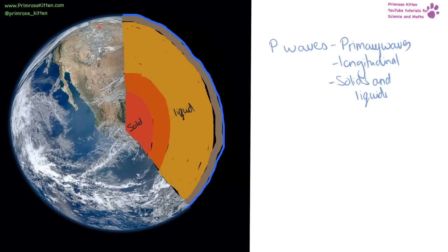So if an earthquake happens over here, the P waves are going to go all the way through, including through the solid core.